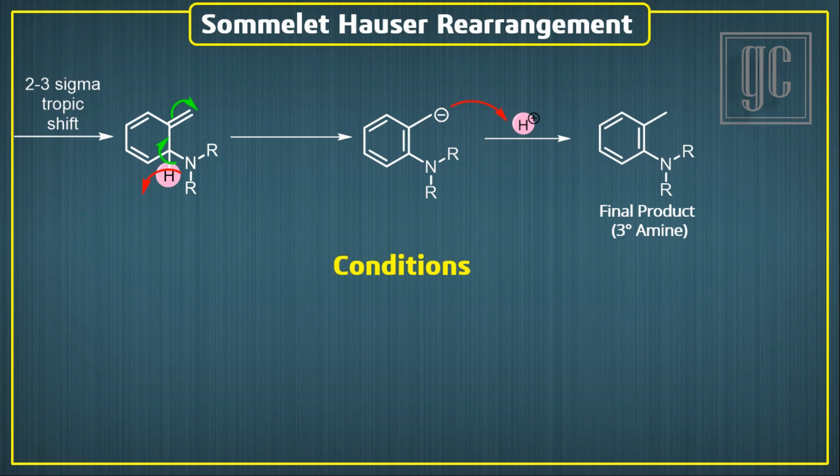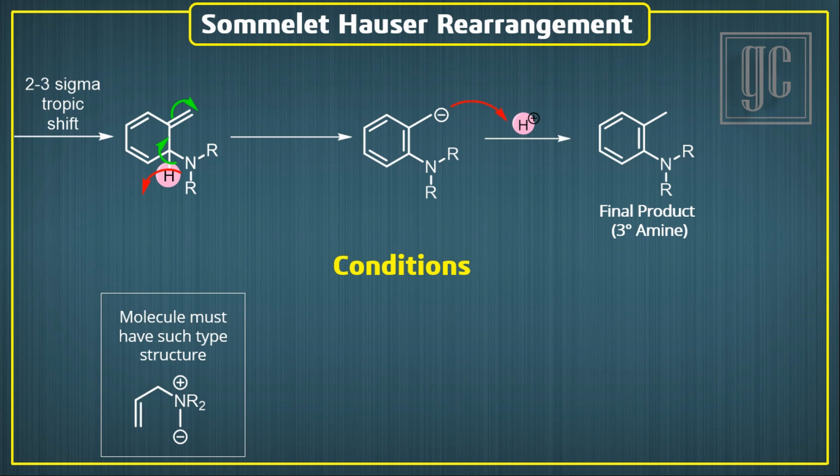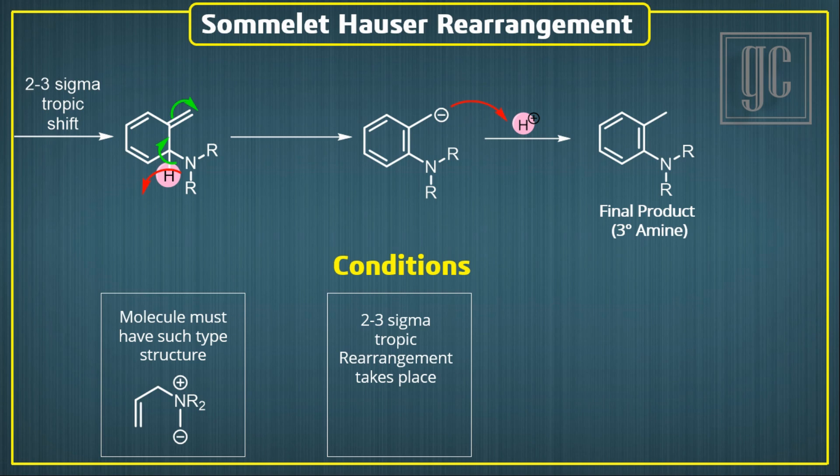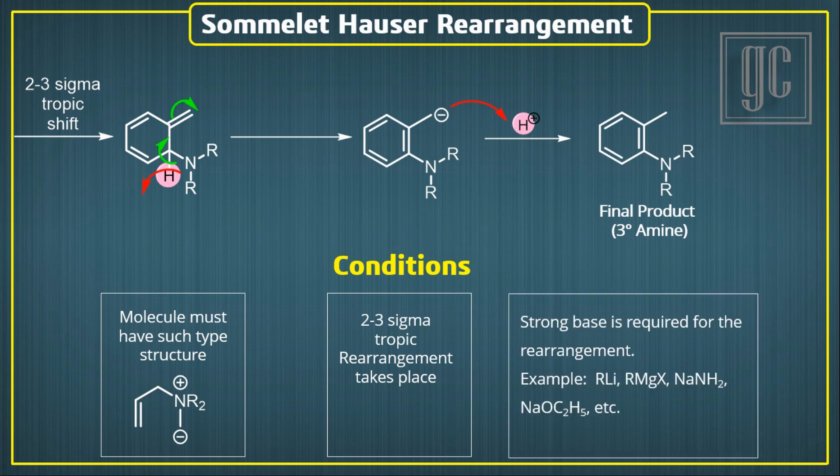The conditions required for the rearrangement: the substrate must have the appropriate skeleton, and during the rearrangement a 2,3-sigmatropic shift takes place. Strong bases are required for this rearrangement, for example alkyl-lithium, sodium amide, sodium ethoxide, etc.